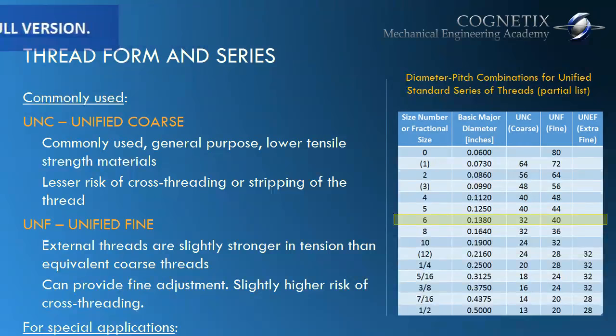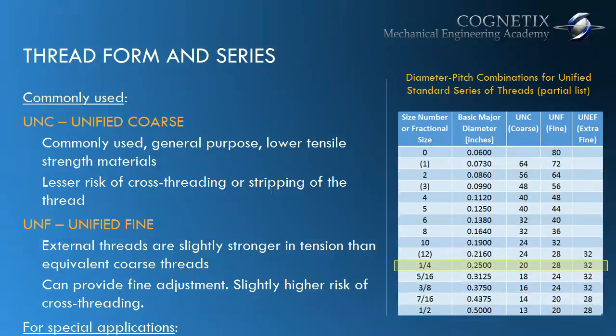On the other hand, if you need fine threads, you would say number 6-40, which is 40 threads per inch. And not typically used, but depending on the application, if you need finer adjustment even beyond what the UNF Unified Fine Thread Standard can offer, there is the Extra Fine Standard, UNEF. For example, a quarter-size screw: a coarse thread would be a quarter-20, a fine thread would be a quarter-28, and extra fine would be a quarter-32.